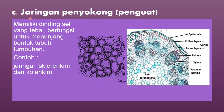Jaringan dewasa yang ketiga yaitu jaringan penyokong atau jaringan penguat. Jaringan penyokong ini memiliki dinding sel yang tebal yang berfungsi untuk menunjang bentuk tubuh tumbuhan. Contohnya yaitu jaringan sklerenkim dan jaringan kolenkim. Jika kamu perhatikan, ini ada gambar jaringan kolenkim. Jika kamu perhatikan lebih jelas di gambar yang ini, maka kamu akan melihat sel yang dindingnya tebal — seperti garis-garis yang ada di dalam ini. Ini adalah bagian dinding selnya yang nampak tebal, yang merupakan jaringan penyokong atau penguat pada tumbuhan.